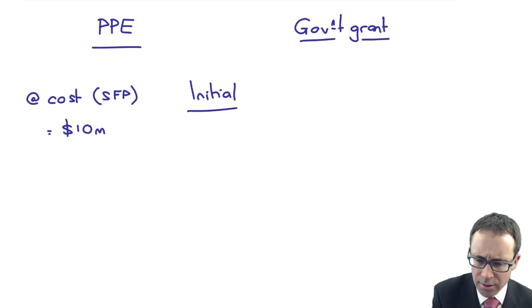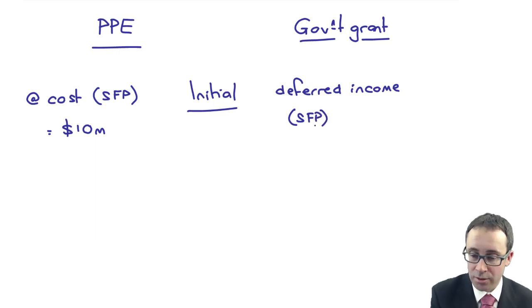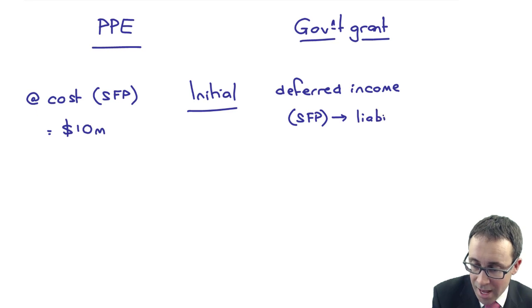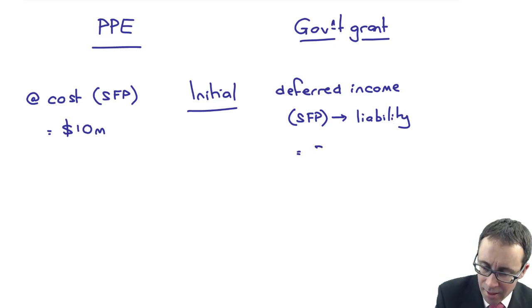The government grants, you recognise it. Is it there as deferred income? Again, explain to the examiner that that is on the statement of financial position. Again, that statement of financial position is a liability figure. You recognise that at $2 million.